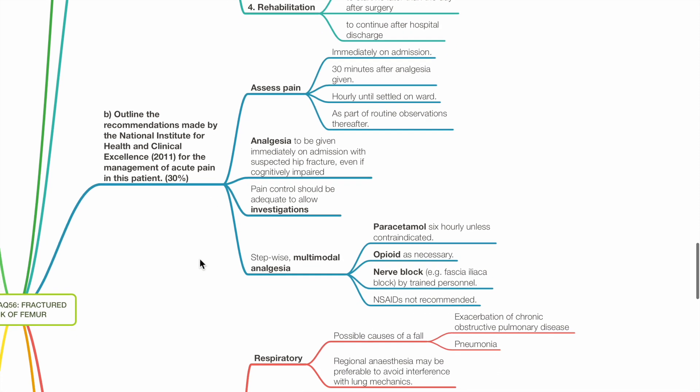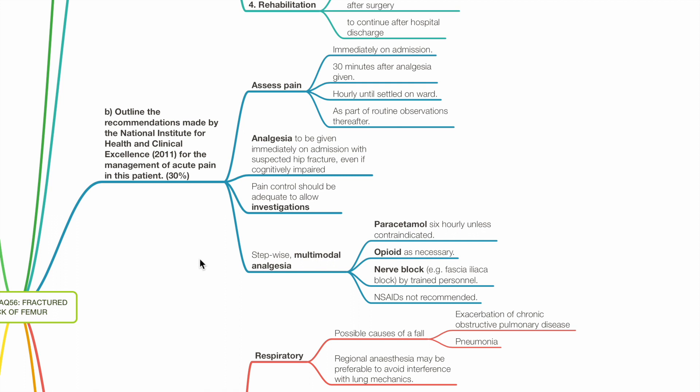Analgesia to be given immediately on admission with suspected hip fracture, even if cognitively impaired. Pain control should be adequate to allow for investigations. Step-wise multimodal analgesia. Paracetamol 6-hourly unless contraindicated. Opioids as necessary. Nerve block such as fascia iliaca block. NSAIDs not recommended.